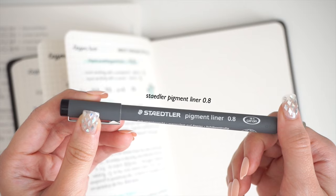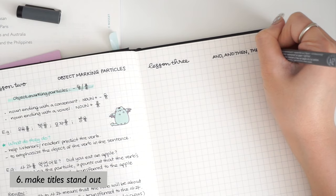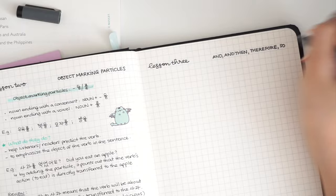I start with writing the title of the lesson with this big tip pen. You can use whatever pen you have, but the point is to make your title stand out so it's easier later on to find what you're looking for. I also prefer starting a new lesson on a fresh new page of the notebook.